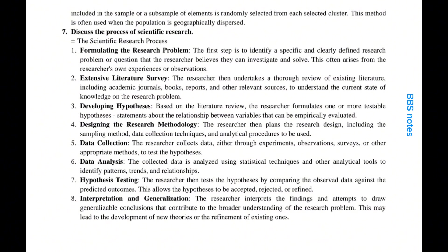Step 2, extensive literature survey. The researcher then undertakes a thorough review of existing literature including academic journals, books, reports and other relevant sources to understand the current state of knowledge on the research problem. Step 3, developing hypotheses. Based on the literature review, the researcher formulates one or more testable hypotheses — statements about the relationship between variables that can be empirically evaluated.